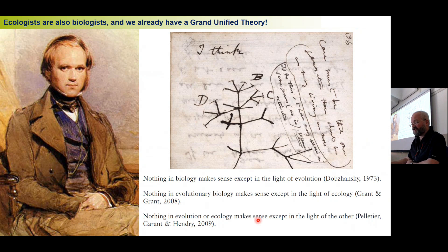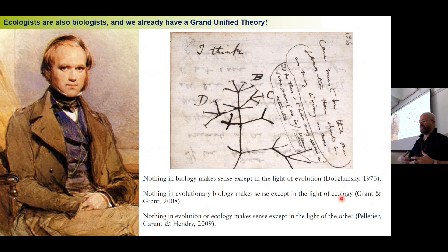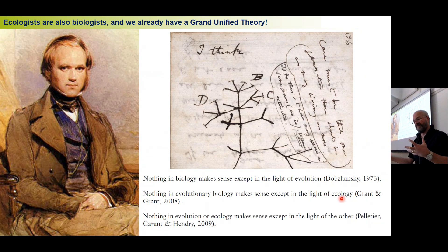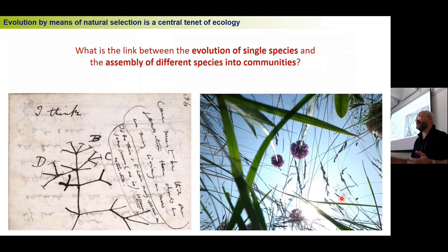Researchers starting with Dobzhansky are saying that nothing in biology makes sense except in the light of evolution. As we go through time, ecologists started saying that nothing in ecology makes sense except in the light of the other — you can't really look at ecology without understanding evolution, and you can't look at evolution without understanding ecology. Today we're going to look at ecology, always in this context of evolution by means of natural selection, which gives us a grand unified theory.